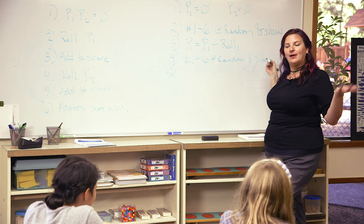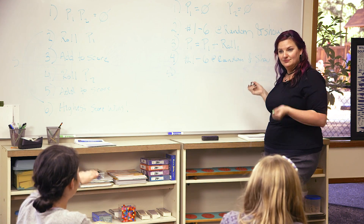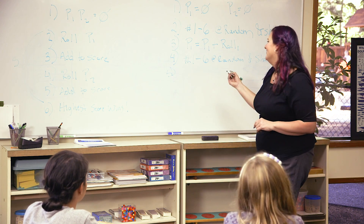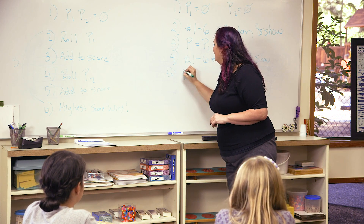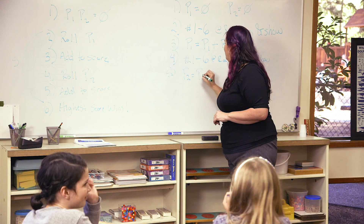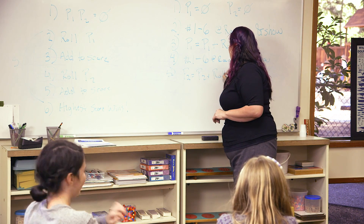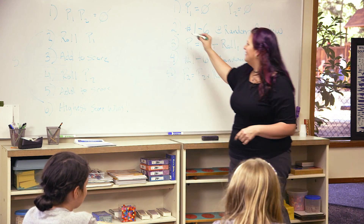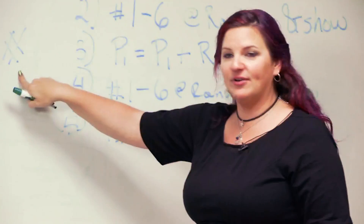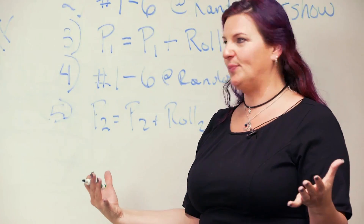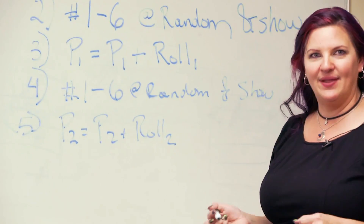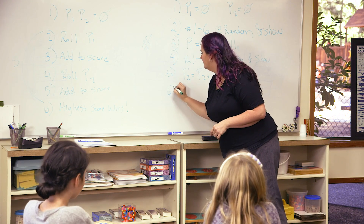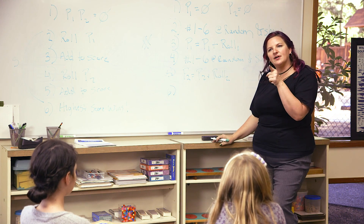We've rolled again for player two. Now the computer should add the score to player two's score — from zero to whatever player two got randomly assigned. Then repeat three times. We have to repeat this however many times we've decided to play in our program before we determine a winner. After we're done repeating that, then what happens?